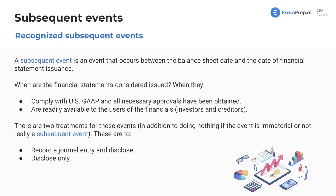Let's talk about recognizing subsequent events. A subsequent event is an event that occurs between the balance sheet date and the date of financial statement issuance. When are the financial statements considered issued? They're considered issued when they comply with US GAAP — so if we issue the financial statements, mail them out, post them online, but they don't conform with US GAAP, they're not considered issued.